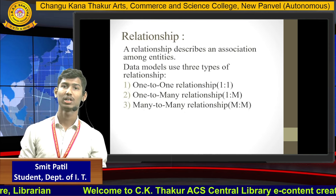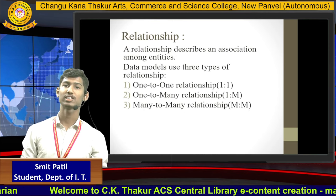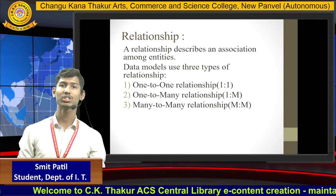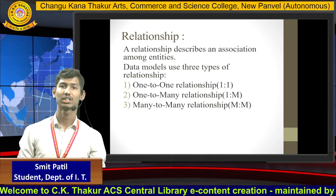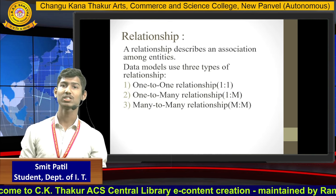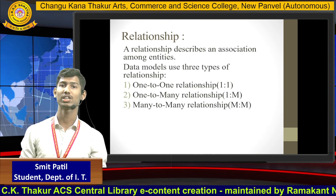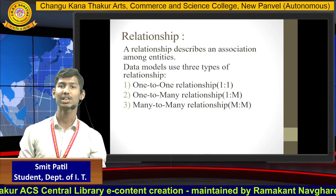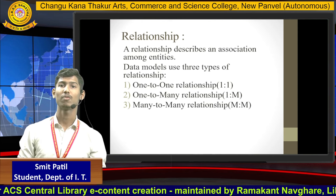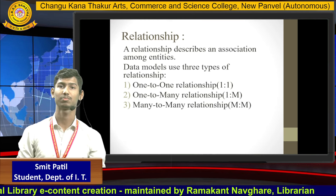Relations describe an association among the entities. There are three types of data model relationships: one-to-one relationship, one-to-many relationship, and many-to-many relationship.